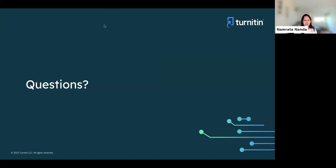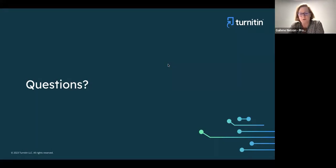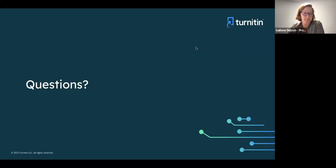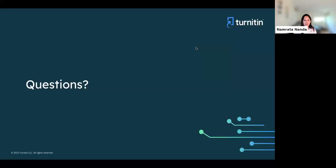Another question for Gaylene: are there plans to allow students to see the AI detection score? We're looking at what the student experience looks like and trying to time that with our updated student similarity report. The first step will be to leverage the PDF download — once that capability is available, that should be something you can share with students as a first step. Question for Zach: do AI false positives show up more frequently with non-native English speakers? We are not seeing that. We explicitly included non-native English content in the training data and have not seen any indication of bias against non-native English speakers.